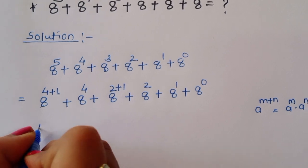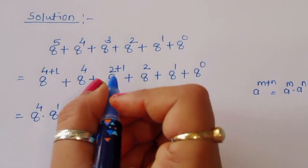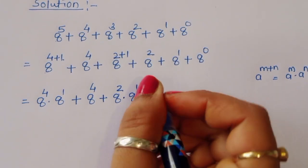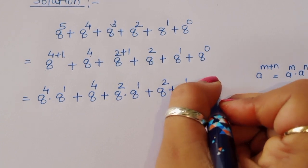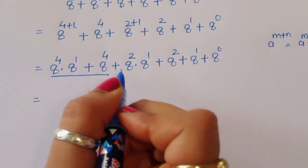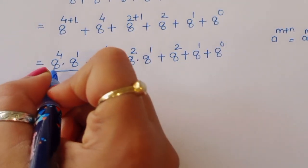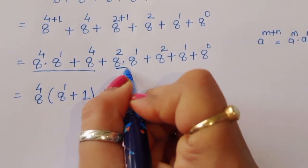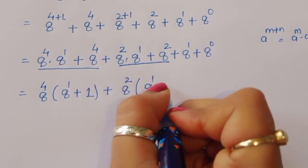Using this formula, we get 8 power 4 times 8 power 1 plus 8 power 4, then plus 8 power 2 times 8 power 1 plus 8 power 2 plus 8 power 1 plus 8 power 0. Now we can take 8 power 4 as common, leaving 8 power 1 plus 1. Similarly, we take 8 power 2 common, leaving 8 power 1 plus 1.